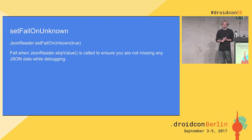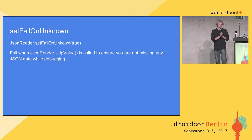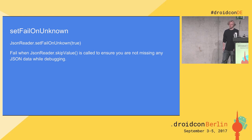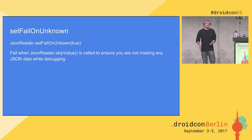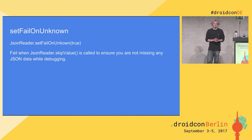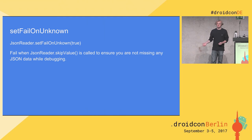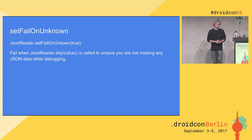setFailOnUnknown is a really great debugging option. It tells the JSON reader that the next time you try to call skipValue, throw a JsonDataException. You probably don't want this in production code, but when you're developing a new API endpoint, you can know you're actually consuming all the data your server developer has given you. If there's an extra field you forgot to map — like the user's last name — you'll find out about it immediately.